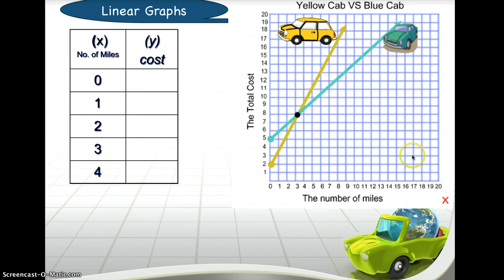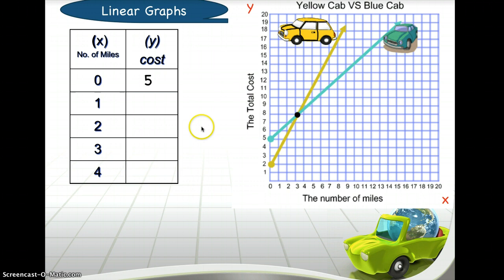While we look at the linear graphs, we're going to read our x and y values. At zero miles on the x-axis, moving up to the y-axis, the value is five — so at zero miles it's five dollars. At one mile, moving up, the value is six, so for one mile you pay six dollars for the blue cab.